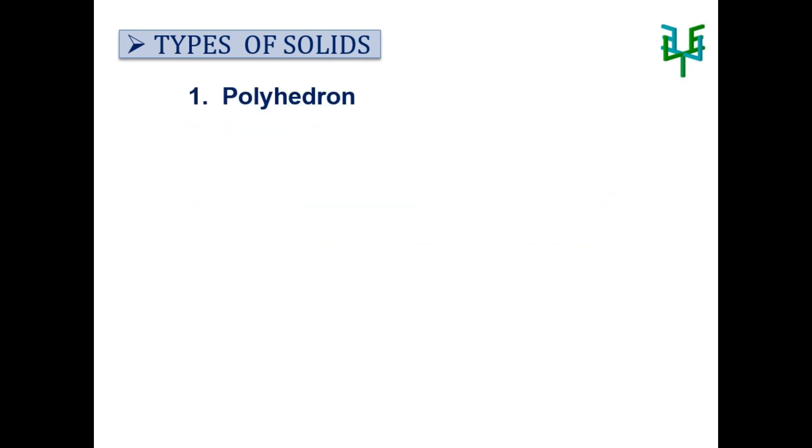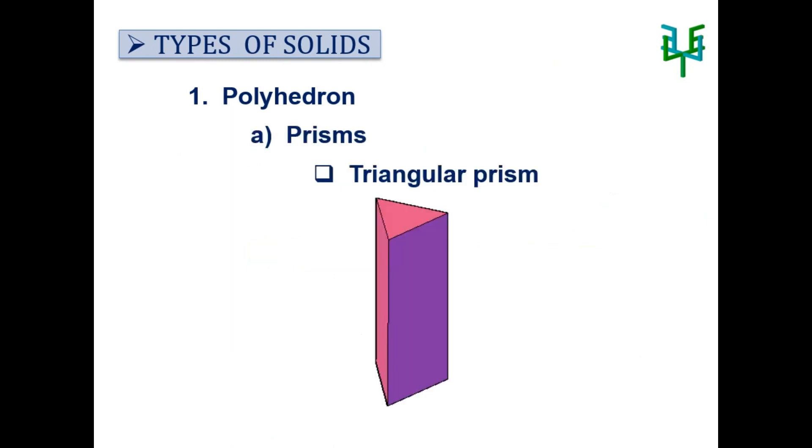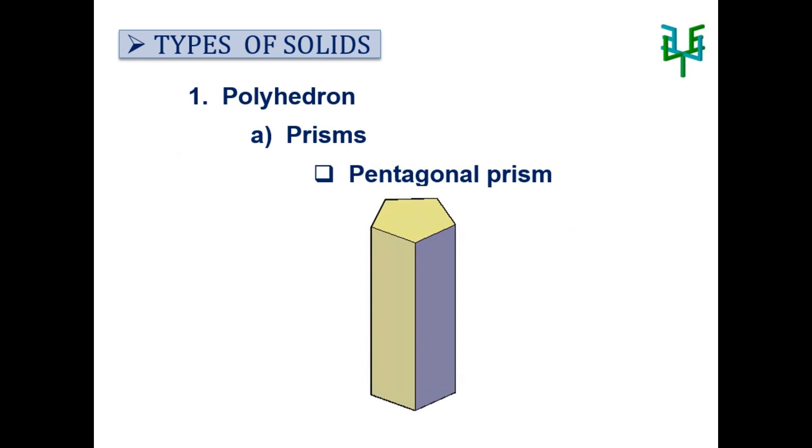Under polyhedron, we have prisms and pyramids. Under prisms, we have triangular prism, square prism, pentagonal prism, and hexagonal prism.